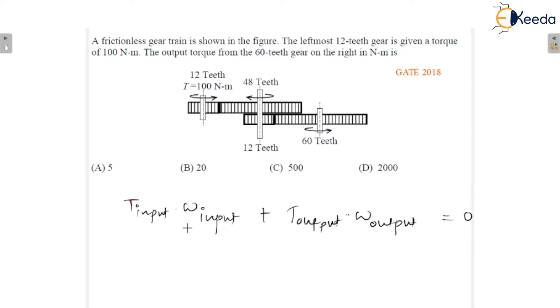We all know that. So, we have to calculate output torque. T_output becomes equal to minus T_input times ω_input upon ω_output. This is the equation. So, this is equation number 1.